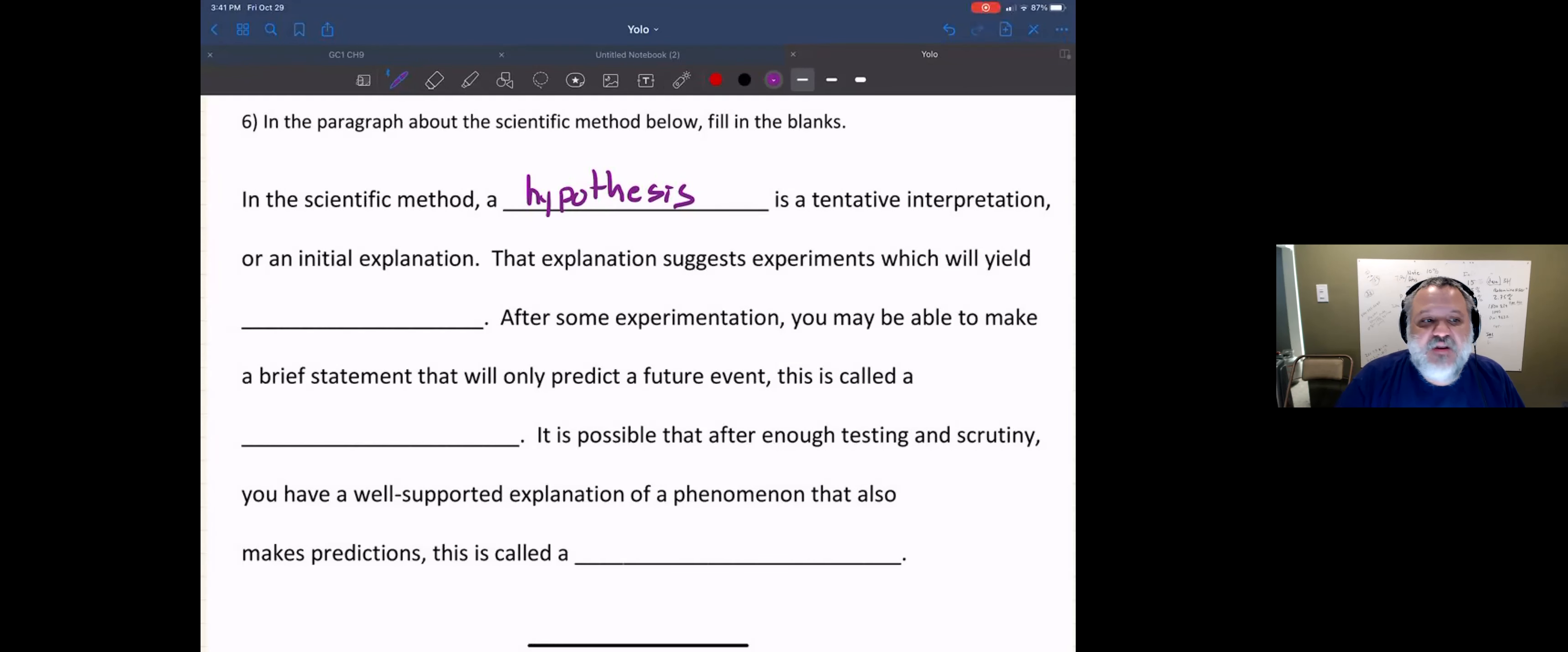Okay, and this tentative interpretation, this initial explanation suggests experiments which will yield what? What do experiments yield? You could say data, you could say results, but really what we want you to get to is the idea that experiments yield observations.